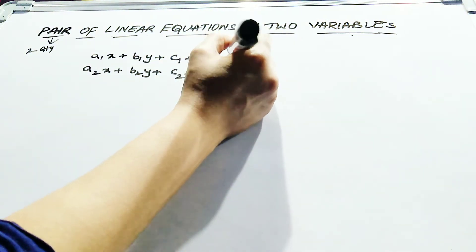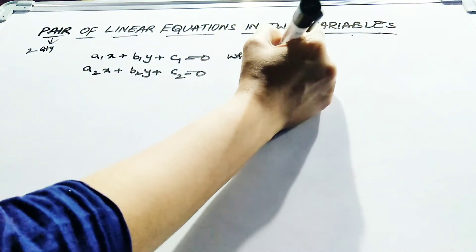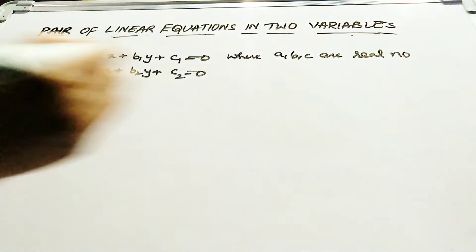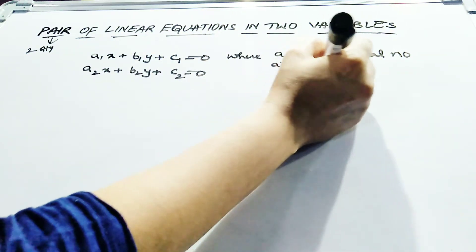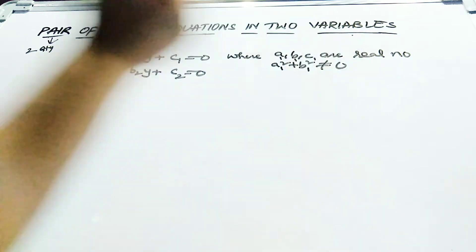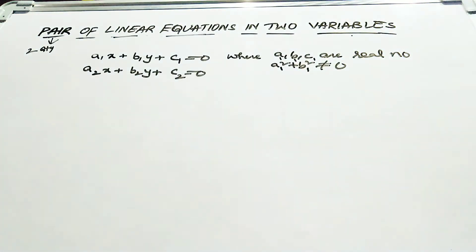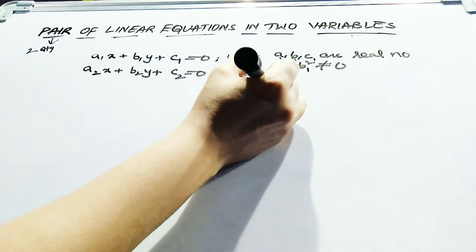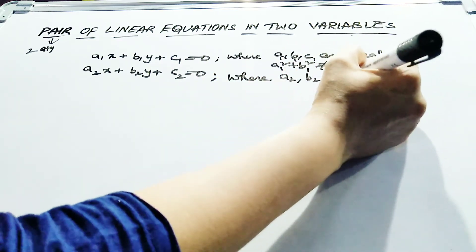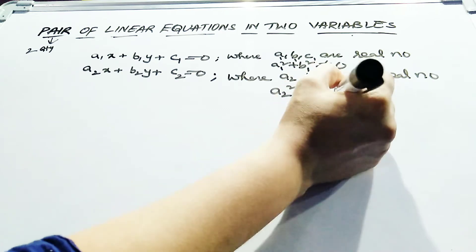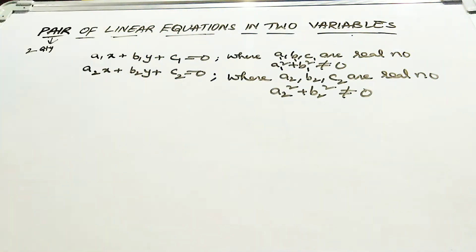The condition is the same: a, b, and c are real numbers, and a1 squared plus b1 squared should not be equal to 0. For the second linear equation, a2, b2, c2 are also real numbers, and a2 squared plus b2 squared should not be equal to 0 — meaning a and b must not both contain 0 at the same time.